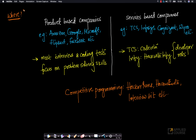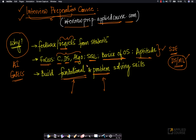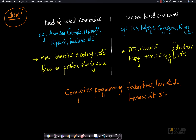You might wonder where these skills are useful. I've been talking about two types: foundational knowledge in computer science and problem-solving skills. Let's look at two broad categorizations of companies — product-based companies and services companies.